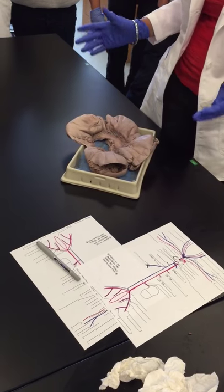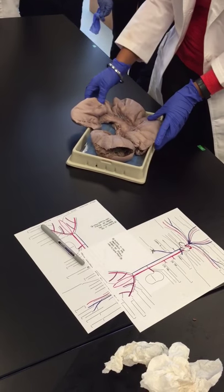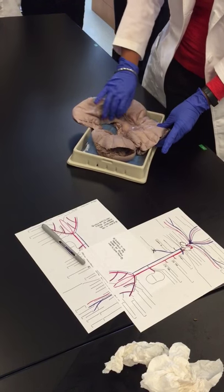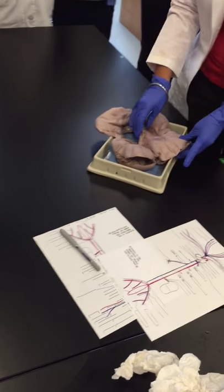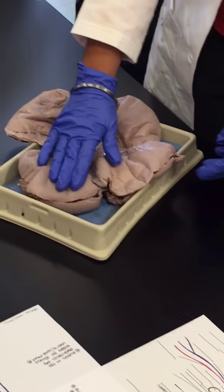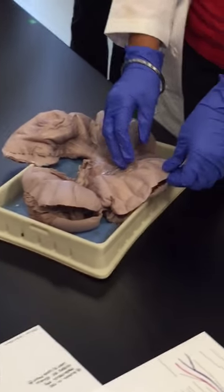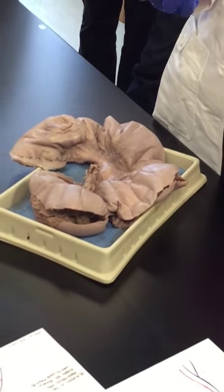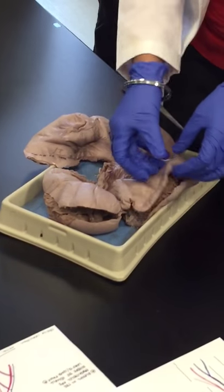This is how a uterus of a pregnant pig looks like. This is the broad ligament, all of this stuff right here. Now, this outer thick covering is called the chorion.